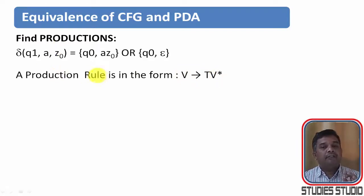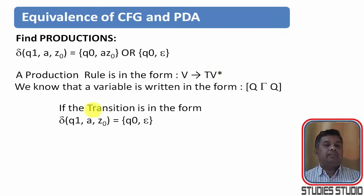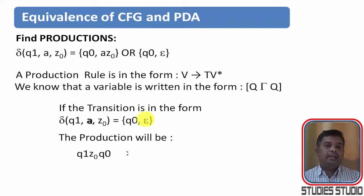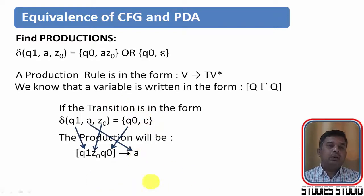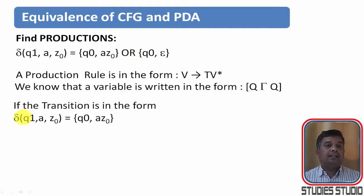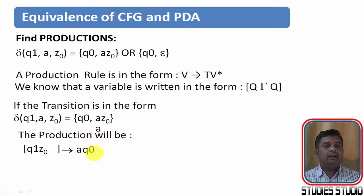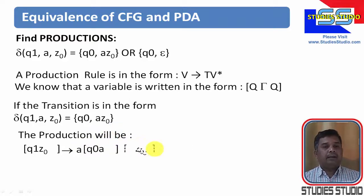The production rule is in the form V derives T V-star, where T is a terminal symbol and V is a variable. If the transition is delta(Q1, A, Z0) = (Q0, epsilon) — meaning we are popping what is on the stack — then the production will be written as: (Q1, Z0, Q0) derives A. If a push operation is involved, such as delta(Q1, A, Z0) = (Q0, A, Z0), then we write Q1 Z0 derives A then (Q0, A, blank) (blank, Z0, blank).